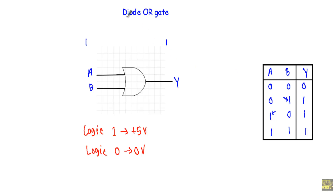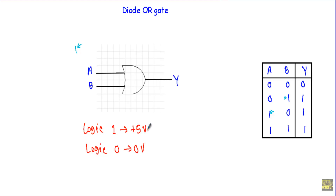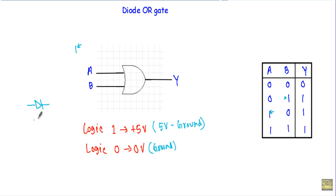Now I will talk about the operation of the diode OR gate. Since I am using a diode, for logic 1 I will apply 5 volts and for logic 0 I will apply 0 volts. 0 volts means that terminal will be directly connected to ground, and 5 volts means I will apply a 5 volt DC voltage between that terminal and ground. For a silicon diode, the diode will conduct if the input voltage is greater than 0.7 volts, which we treat as logic 1. If it is less than 0.7 volts, we treat that as logic 0.